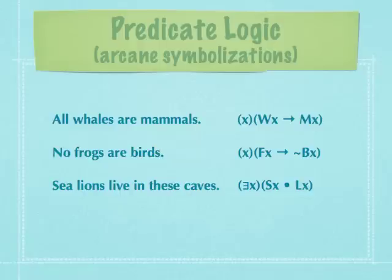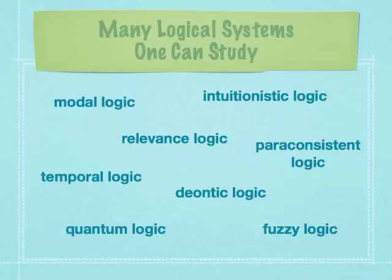This is just the tip of the iceberg. There are many different formal systems used to analyze different fragments of natural language. For example, statements about what is necessarily true or possibly true are governed by modal logic. There are also temporal logics, relevance logics, deontic logics, and so on — the sorts of systems that professional logicians study.